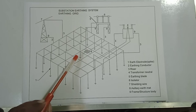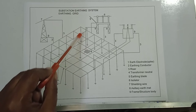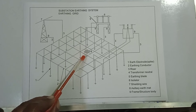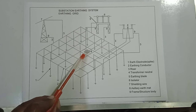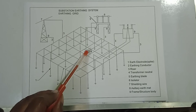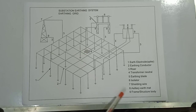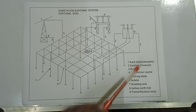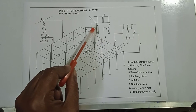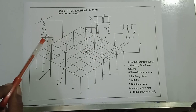When the isolator is manually operated, the auxiliary earth mat functions to reduce the touch voltage on the operator. The ninth component is the frame structure body.